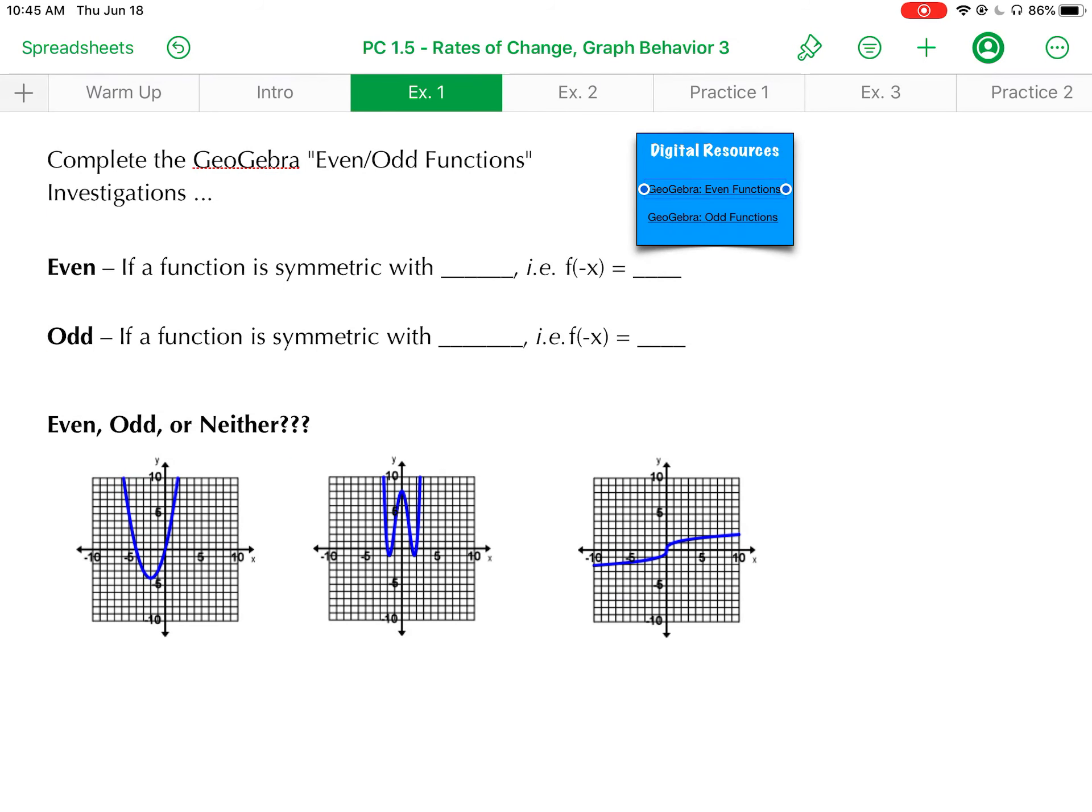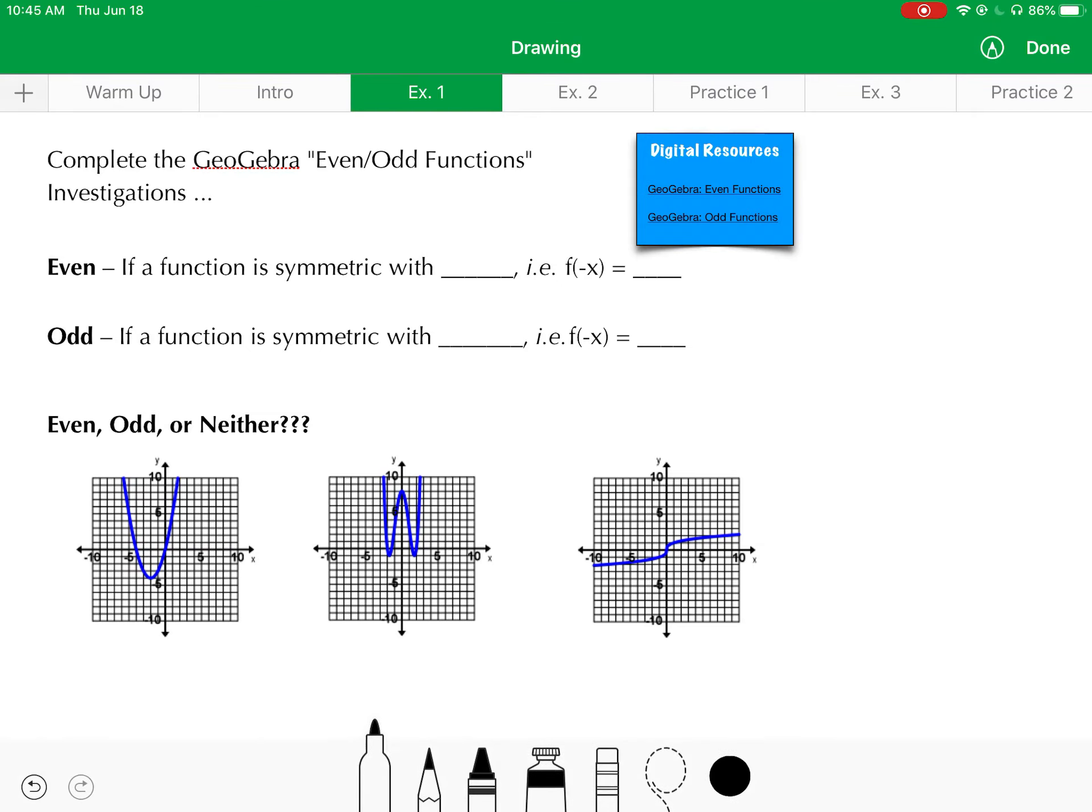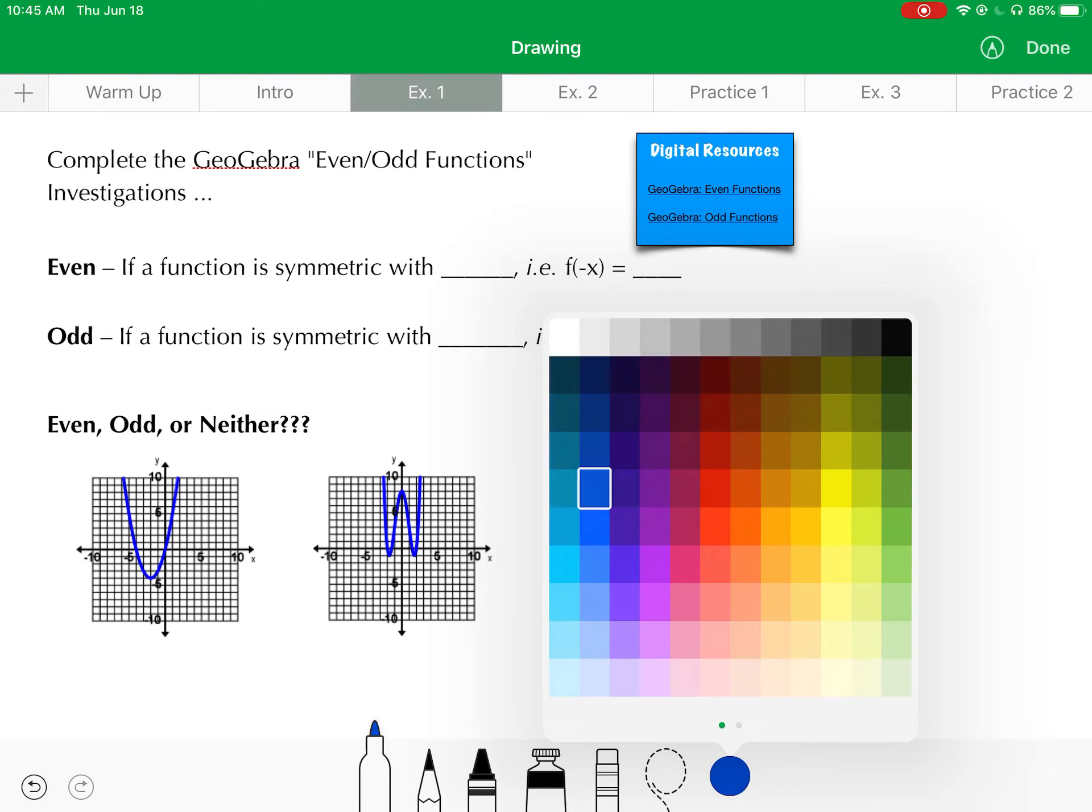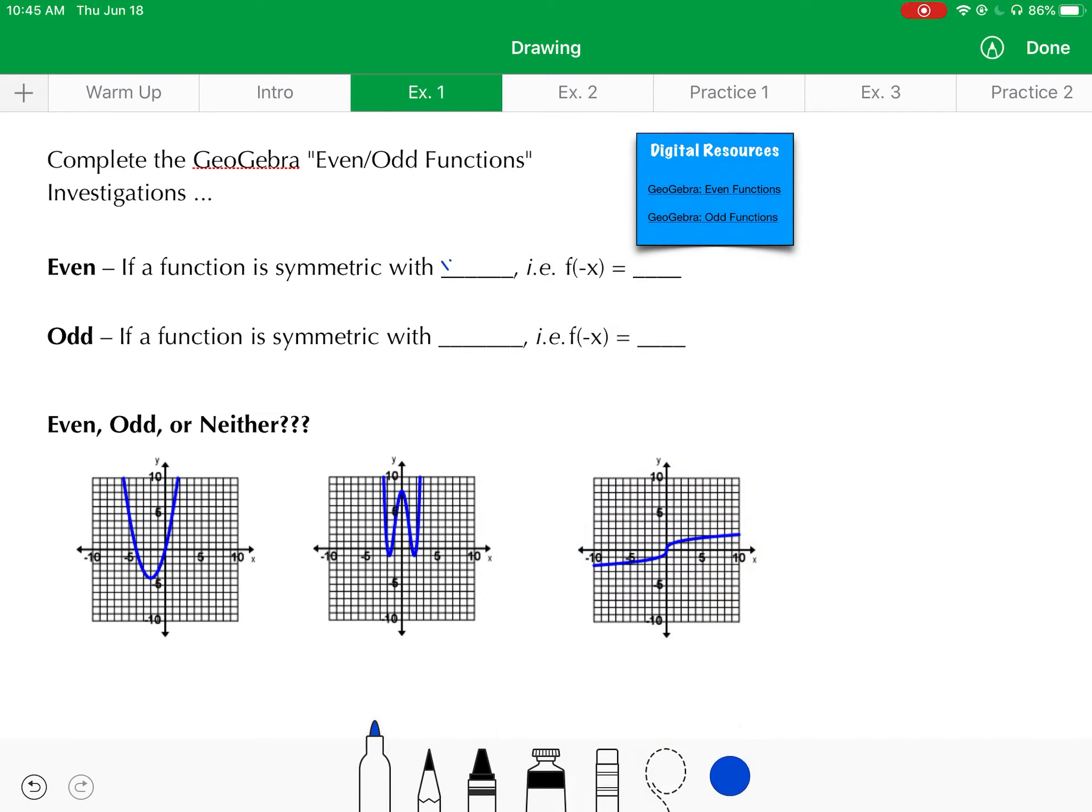A function is even if it's symmetric with the y-axis. And algebraically, that means f(-x) should give me the same thing as f(x).